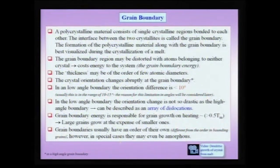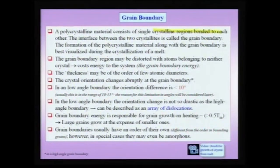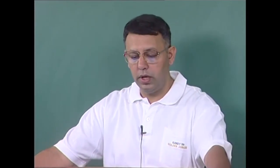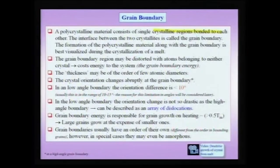Let us start our discussion of interfaces with the grain boundary. Typically if I take a piece of aluminum or a wire of copper, it is a polycrystalline material. This polycrystalline material has single crystalline regions bonded to one another, and the interface between these two crystallites is called a grain boundary. A grain boundary is considered a two-dimensional plane or surface, but in reality the grain boundary region can extend a few atomic diameters into either of the bounding crystals. The best way of visualizing the formation of a grain boundary is by considering crystallization of a melt.